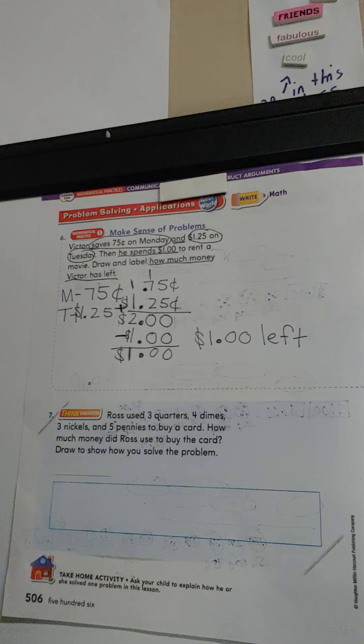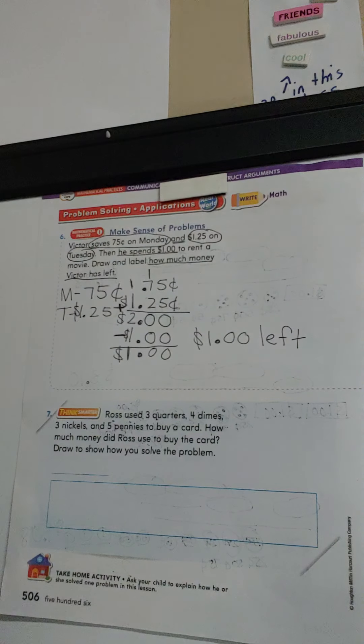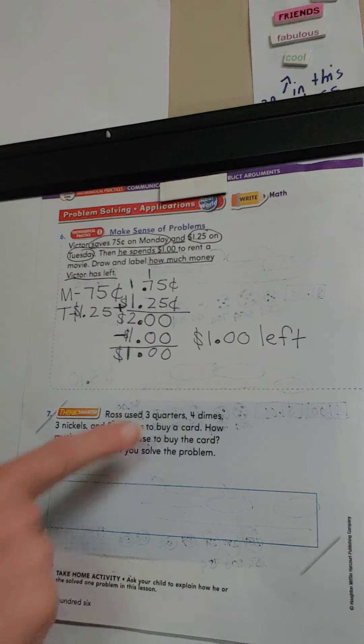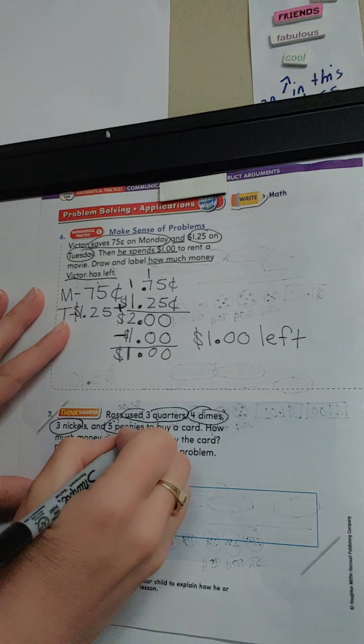Solve the problem. All right, so we're going to use this space. It's the same thing. Let's go back. Circle. He used three quarters, four dimes, three nickels, and five pennies.